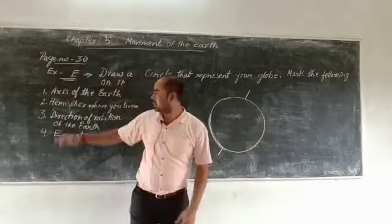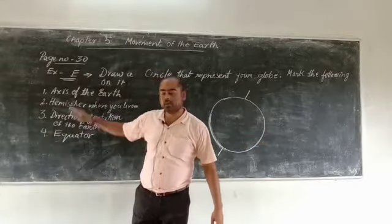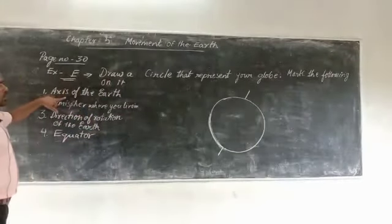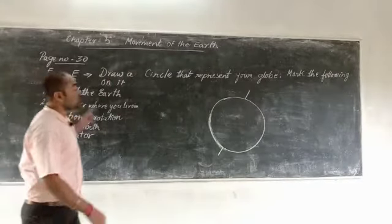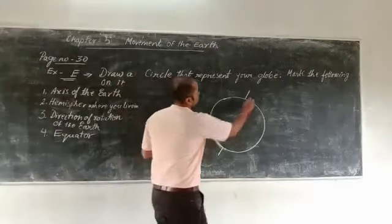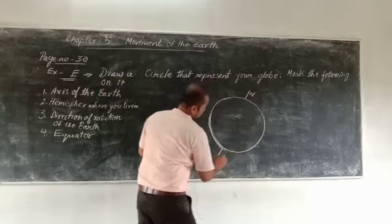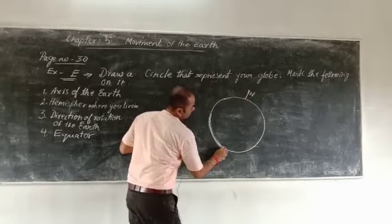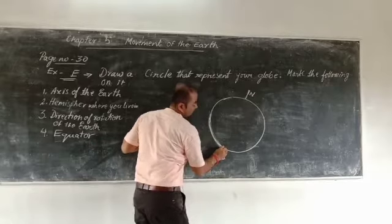First, you have to mark these points. One, two, three, four. Number one is axis of the Earth. As we studied, where is the axis of the Earth? It is north, it is south. This is the axis of the Earth - north axis, south axis.